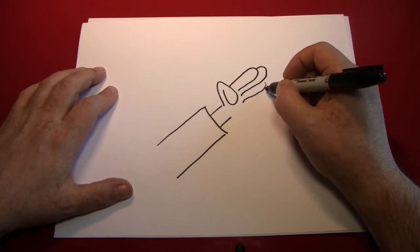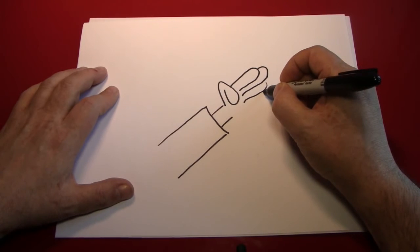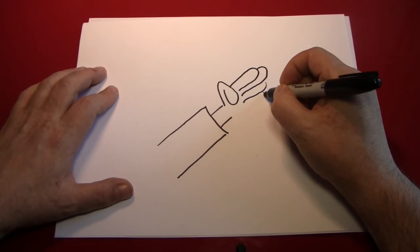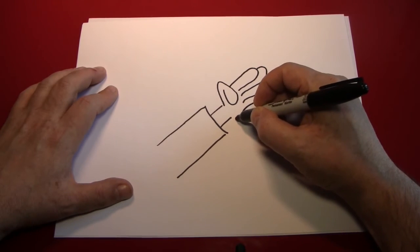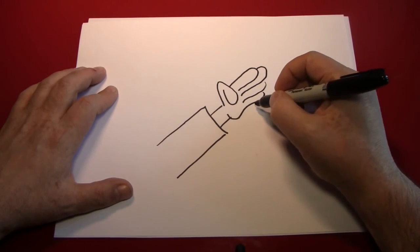And the pinky starts kind of here. Not too much shorter than the ring finger at all, right around where the fingertip ends. And it does the same thing by coming out like that.